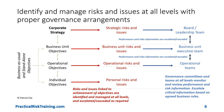Governance committees and teams at all organizational levels monitor and review performance and risk information, and escalate crucial information based on agreed business rules and triggers. Institute the appropriate governance arrangements and structure across all organizational levels to drive performance, accountability, and strategy execution. Risks and issues must be discussed within the context of organizational performance and strategy execution, since risk management is about increasing the likelihood and extent of success. Therefore, avoid looking at a risk matrix or a risk register without information on the achievement of corporate strategy and performance measures.